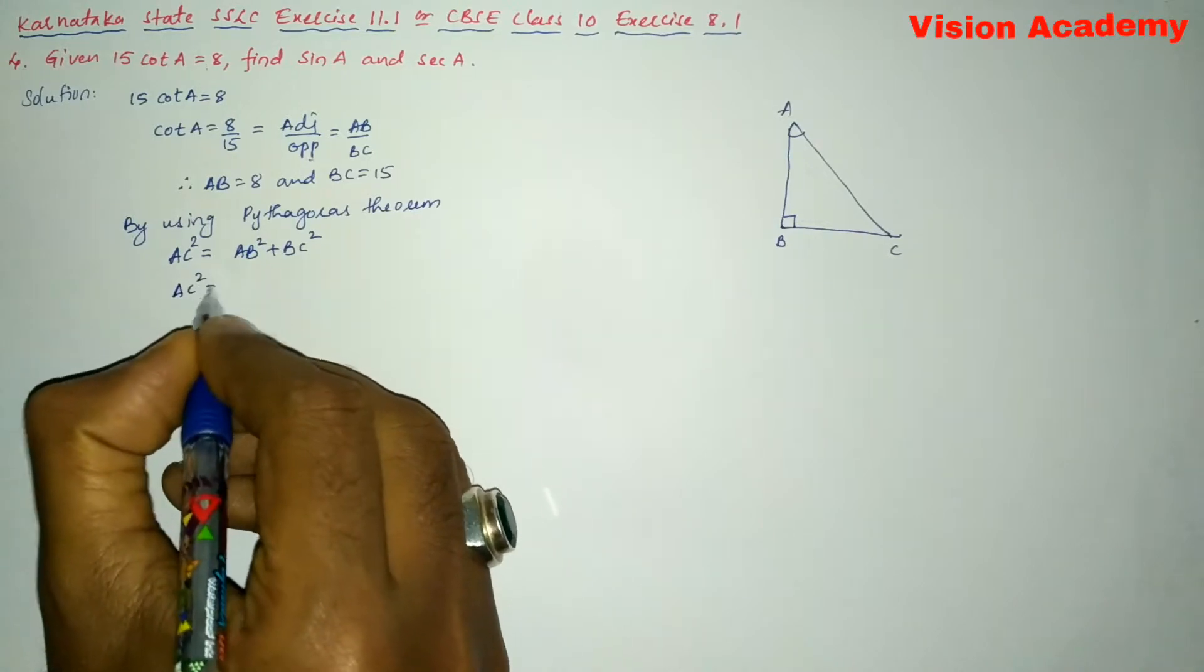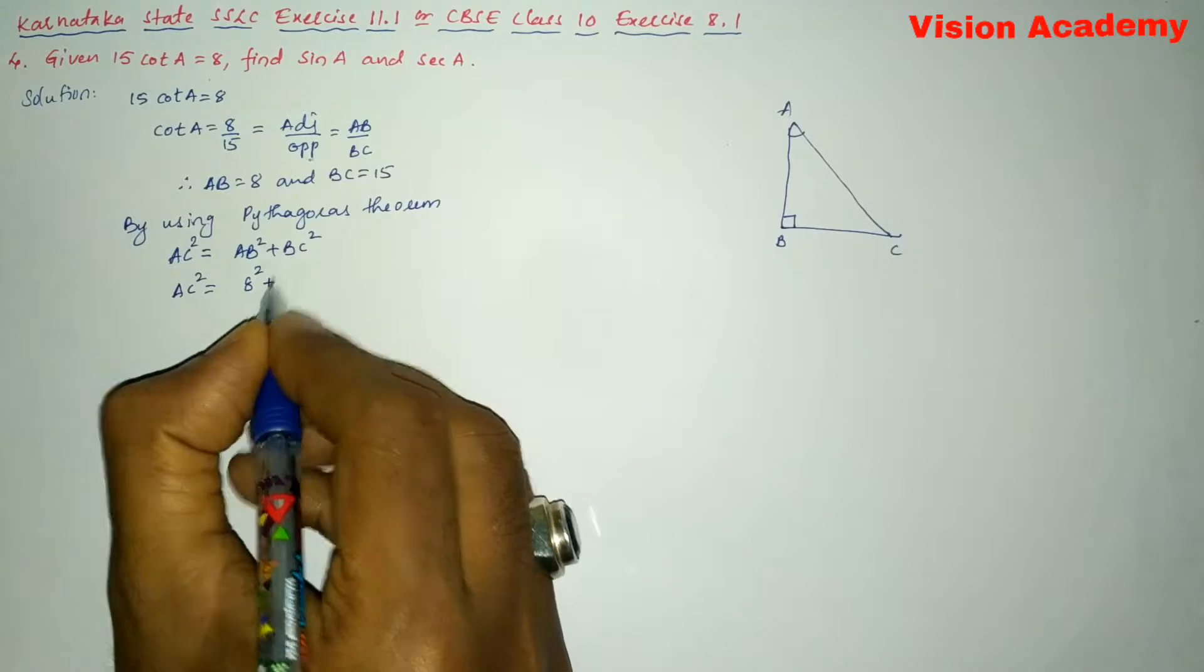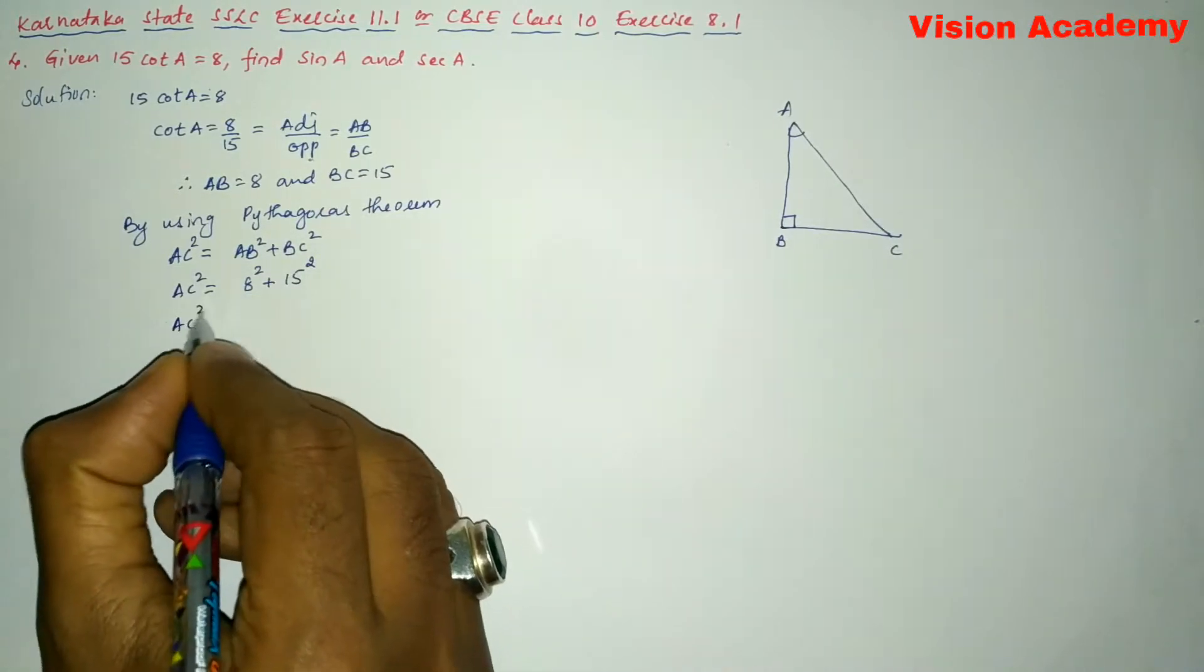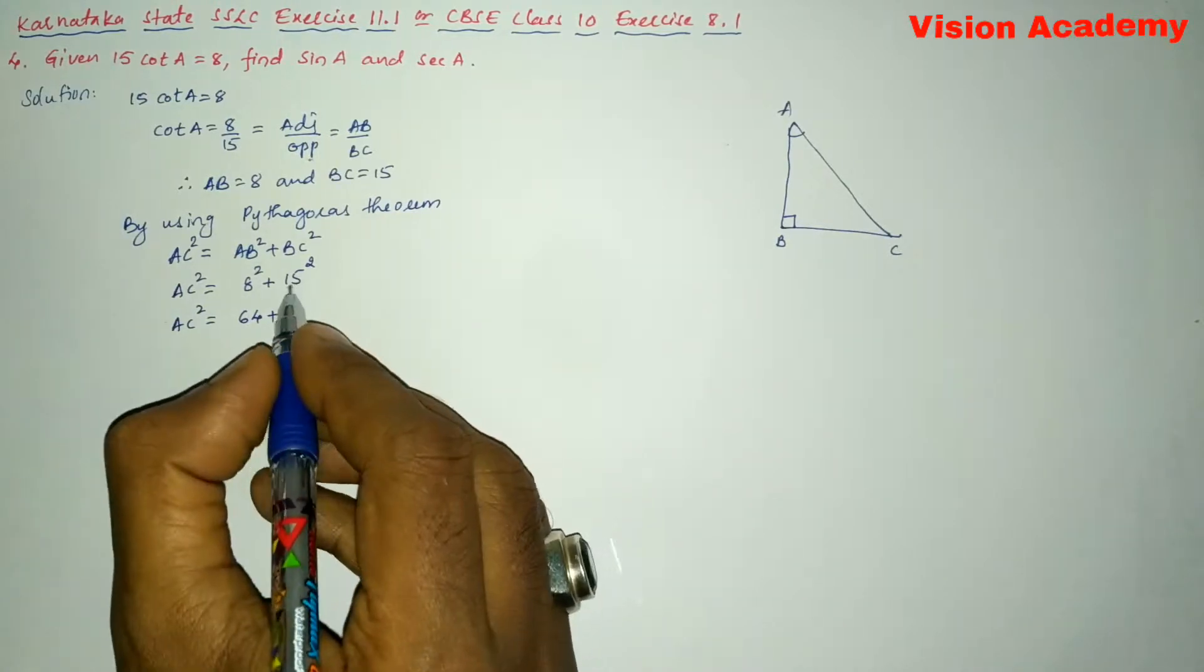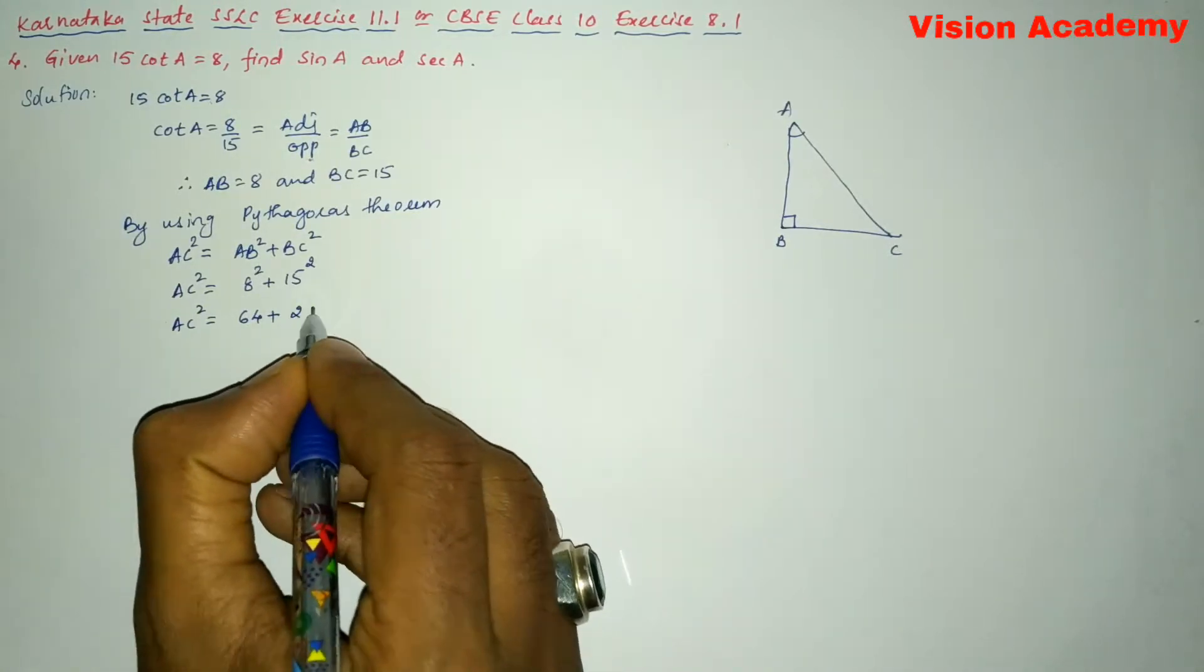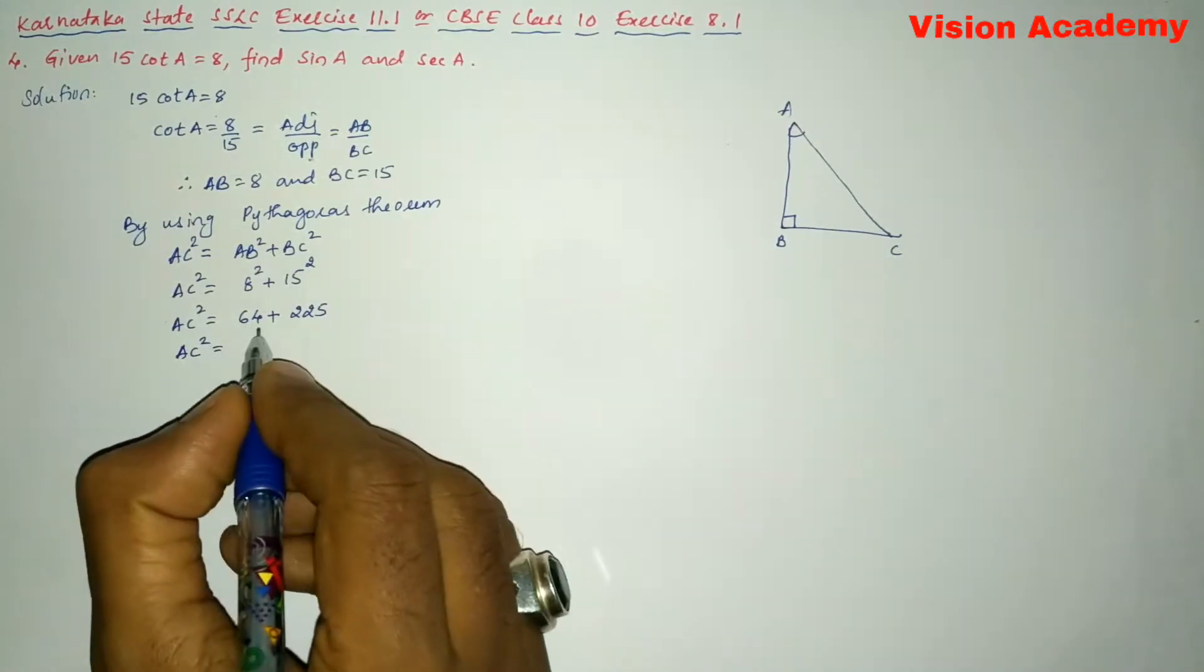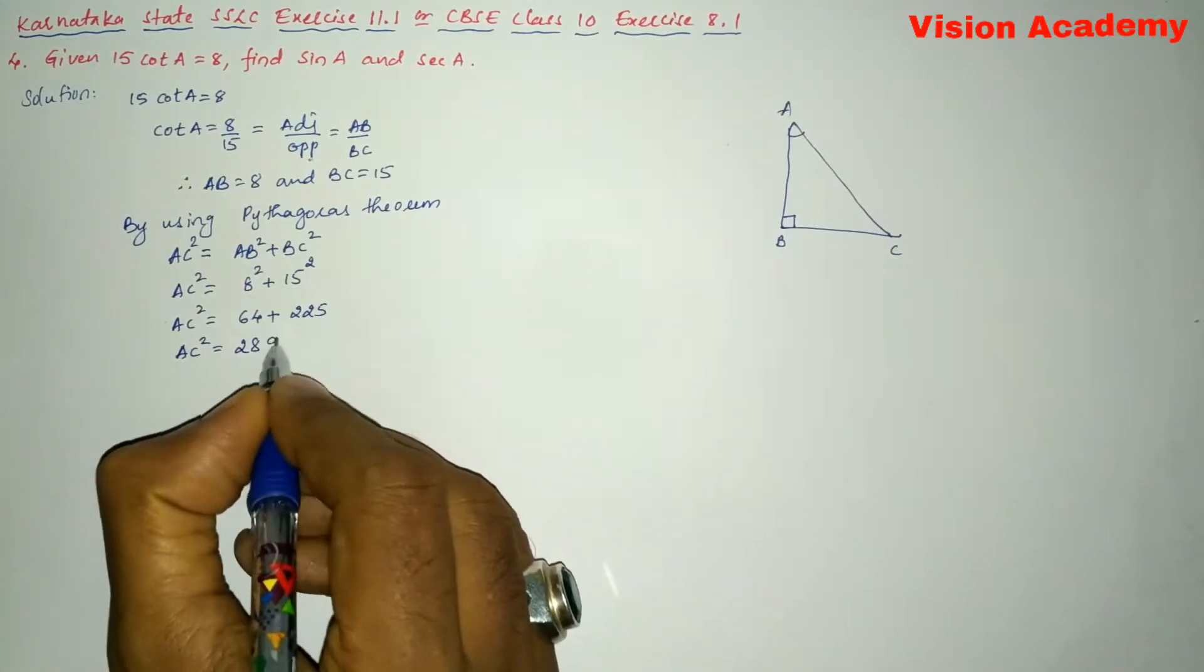So here we will write AC square is equal to 8 squared, which is 64, plus 15 square. So 15 squared is 225. Here we will write AC square is equal to 64 plus 225, which gives us 289.